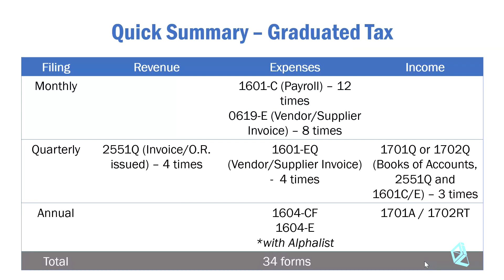For quarterly income tax returns, you have Form 1701Q for individuals and Form 1702Q for corporations. The basis here would be the books of accounts and the forms you have filed for revenues and expenses — specifically Forms 2551Q, 1601C, 0619E, and 0601EQ.